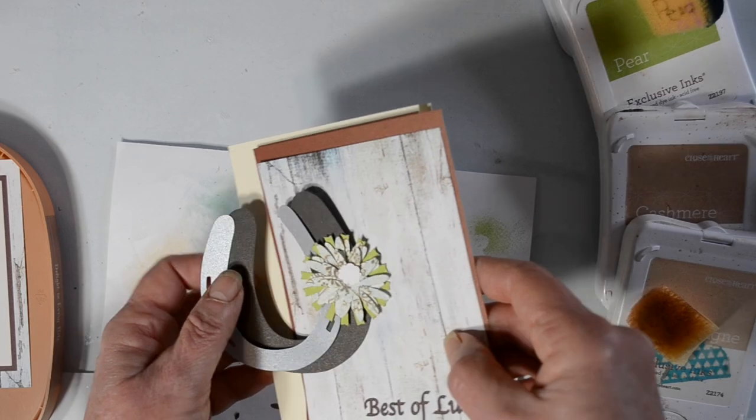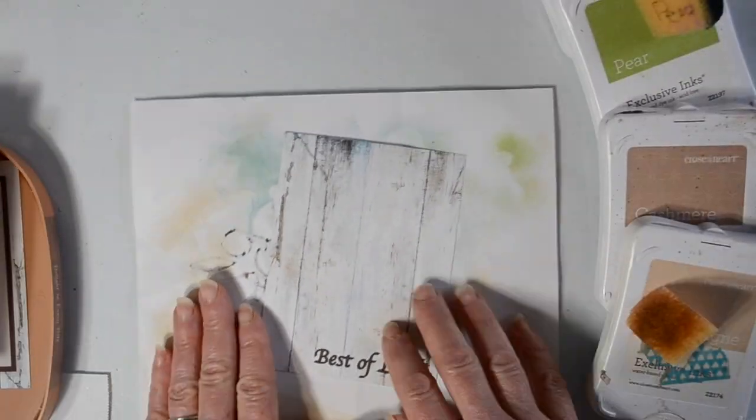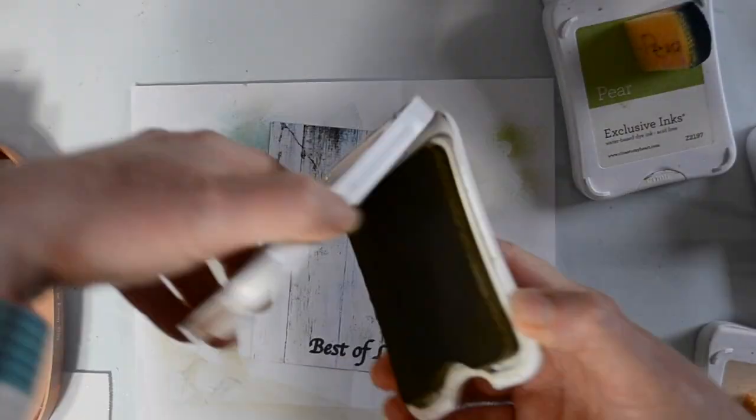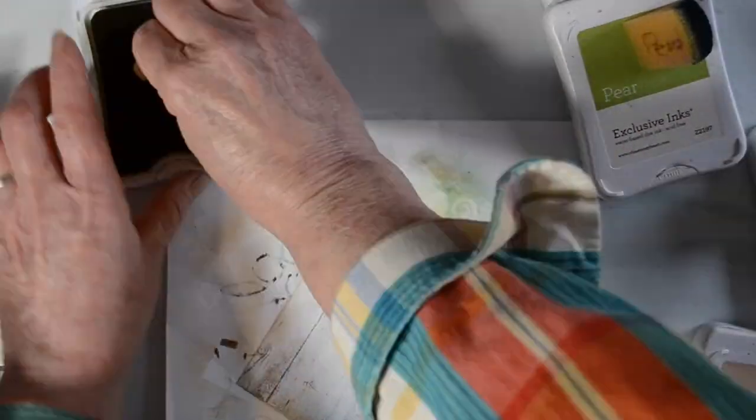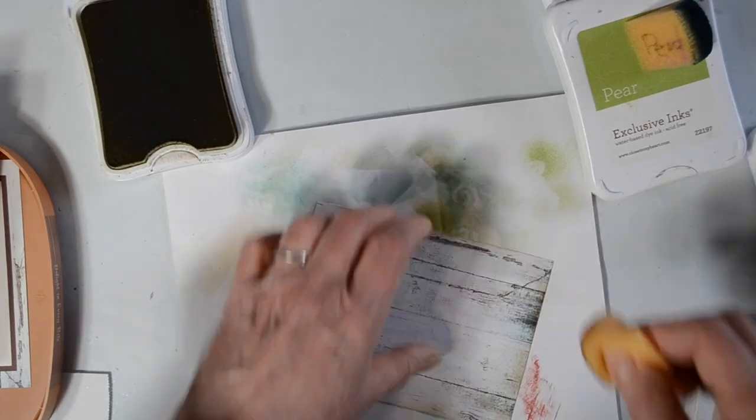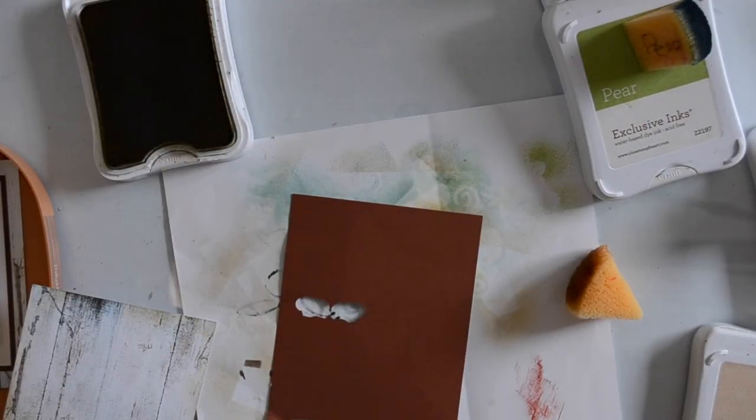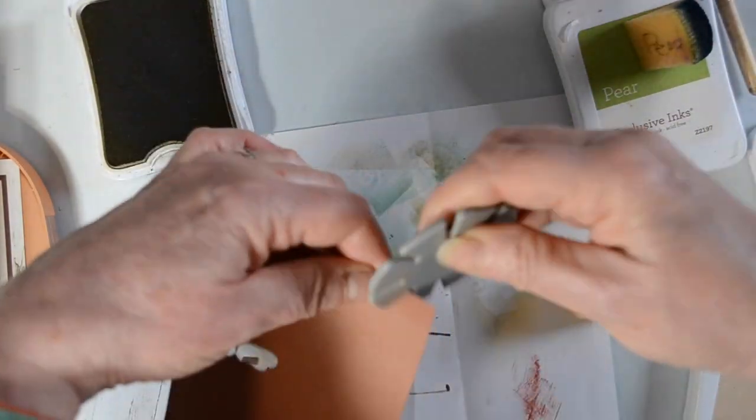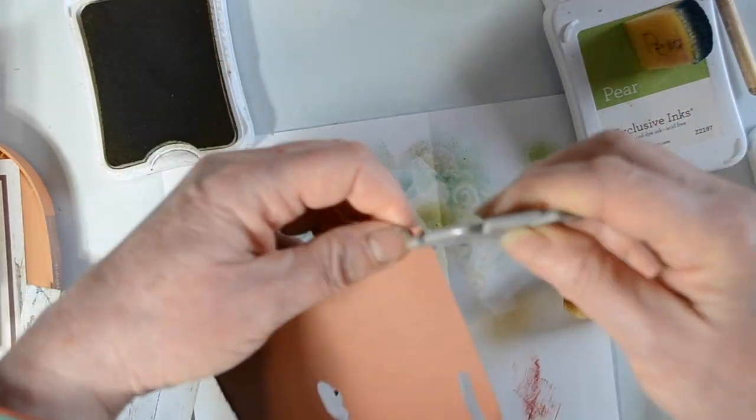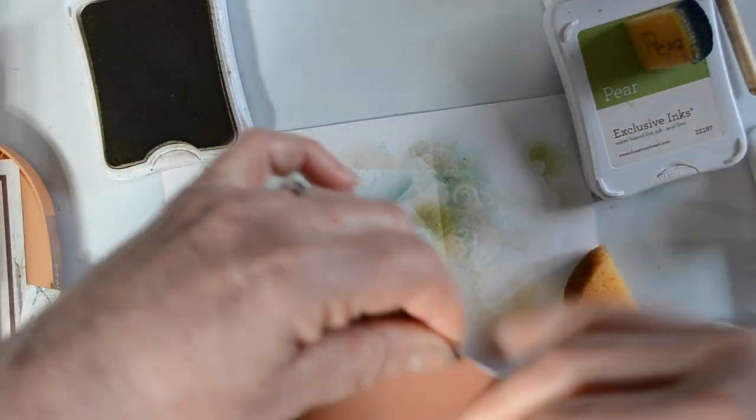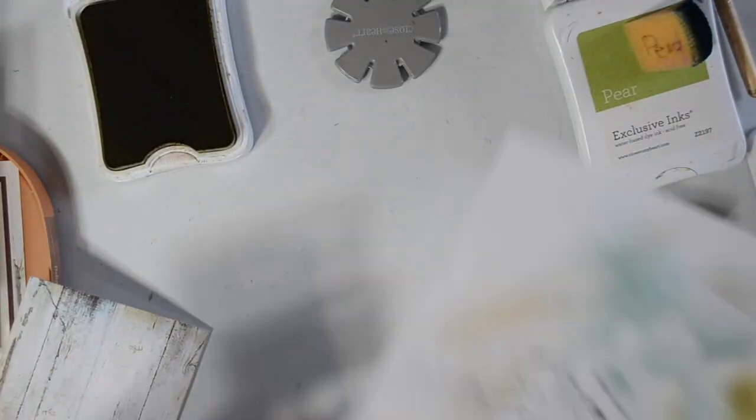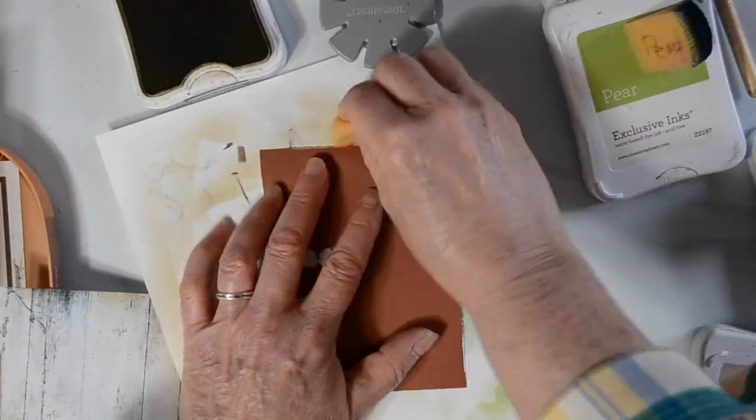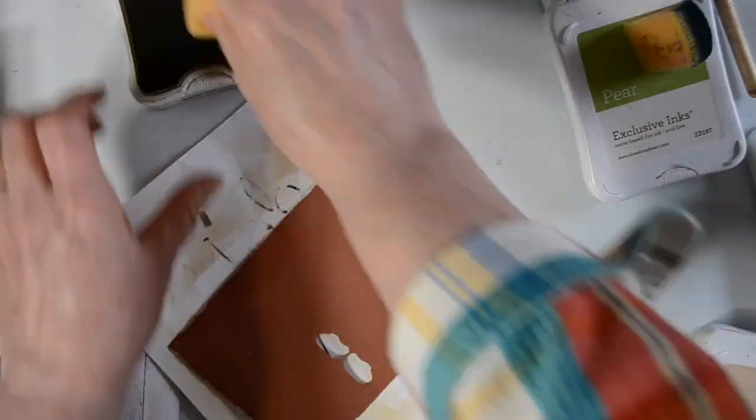Let's get started by inking up some of these pieces. I have some different Close to My Heart inks out, and all I'm doing is going around the edges and finishing them up. On this brown piece of scrap paper, I'm distressing the edges with a distressing tool, and then I'll go around it with a little bit of that cashmere colored ink.